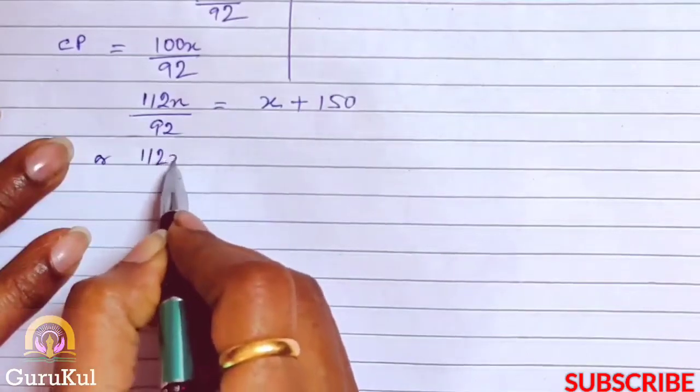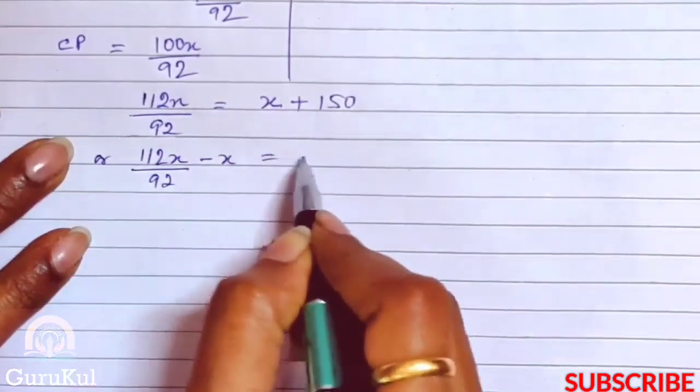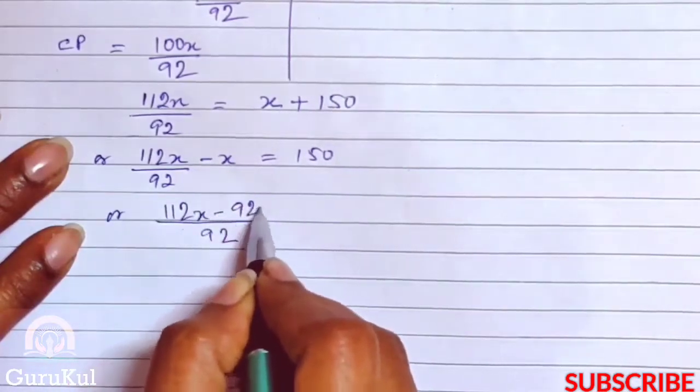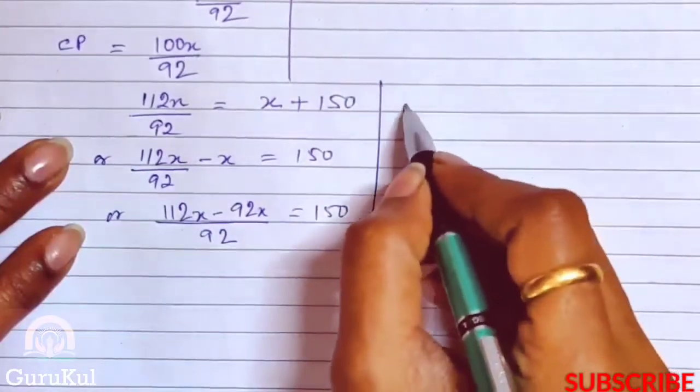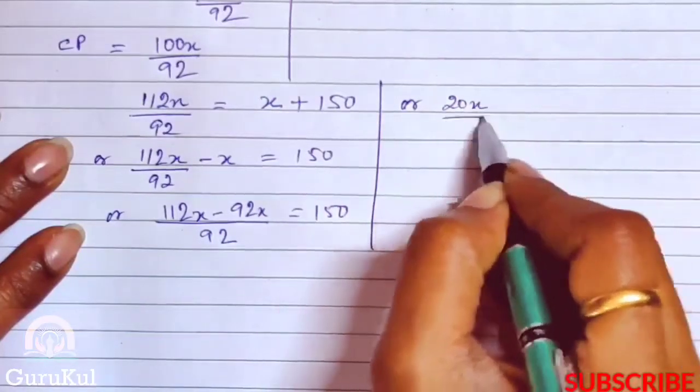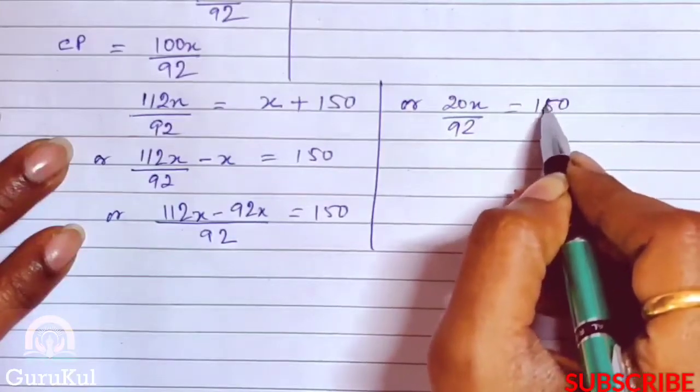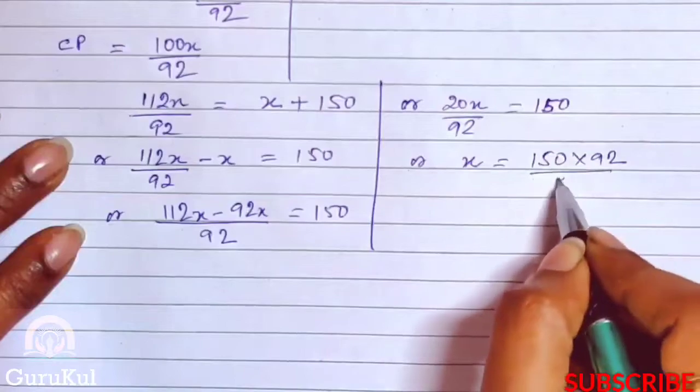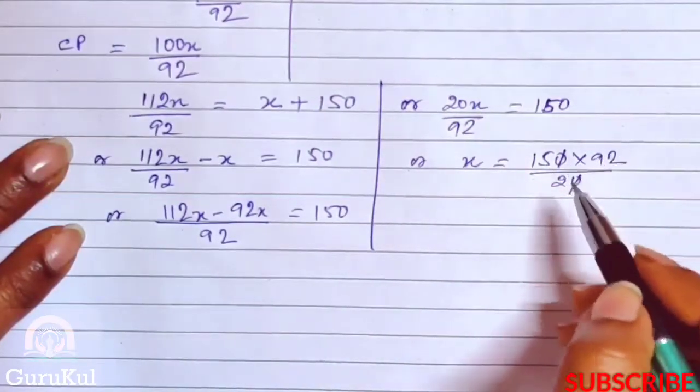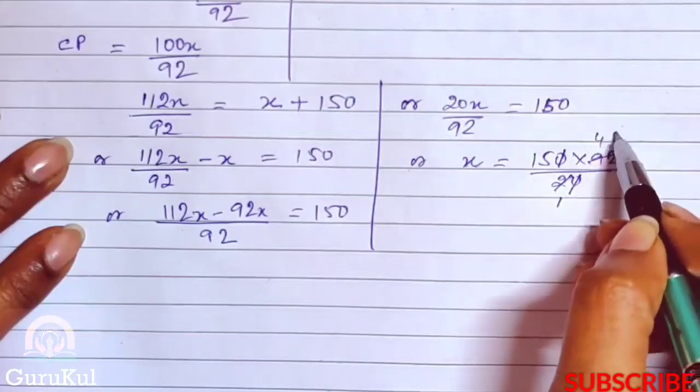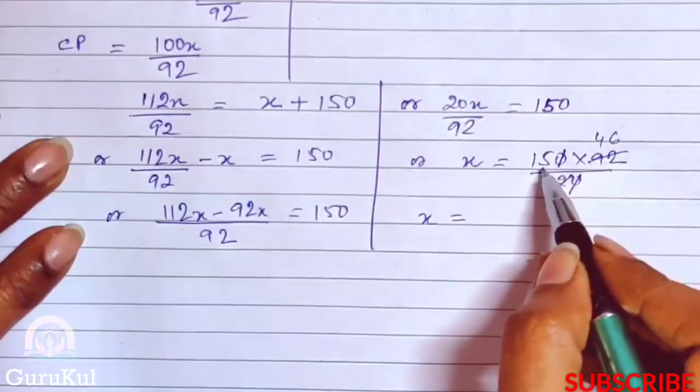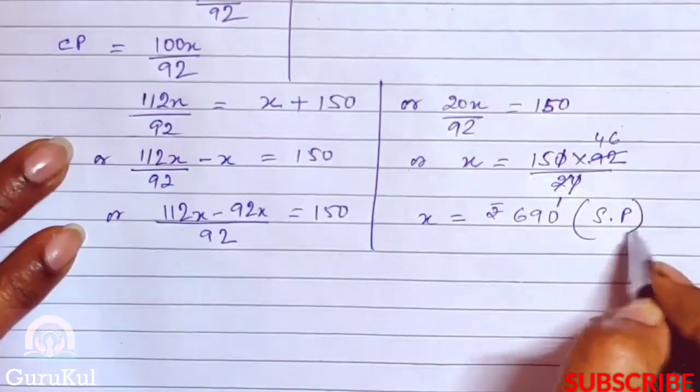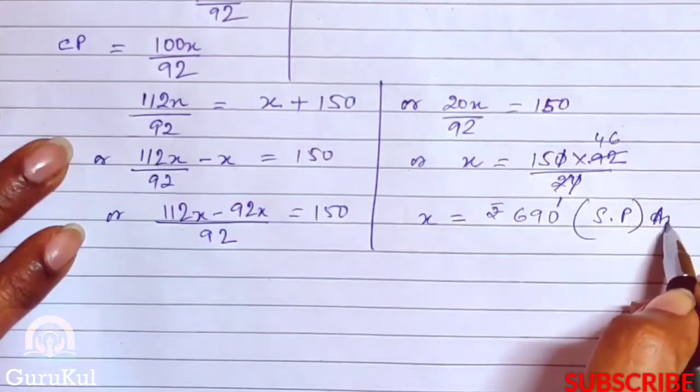Solving this equation: 112x by 92 minus x equals 150. Since 92 is common, 112x minus 92x equals 150. After subtraction we get 20x by 92 equals 150. So x equals 150 into 92 by 20 through cross multiplication. This gives 15 times 46, which equals 690, the selling price of the leather purse.